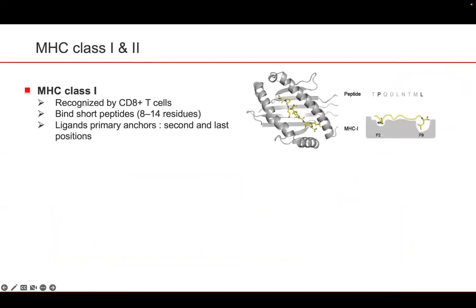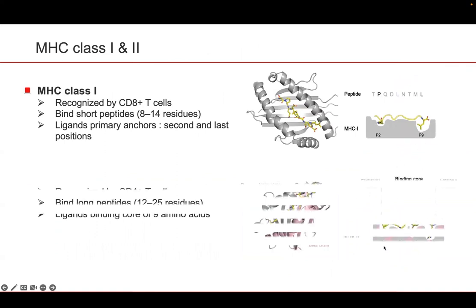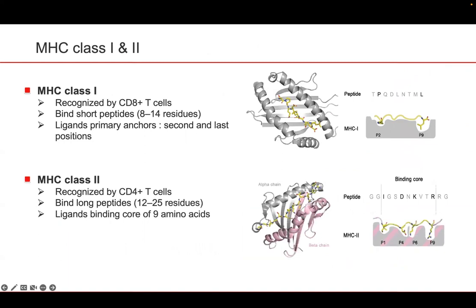There are two classes of MHC molecules. MHC class 1 are recognized by CD8 T-cells, bind short peptides roughly between 8 to 14 residues, and their ligands' primary anchors are at the second and last positions. For class 2, they are recognized by CD4 T-cells, bind longer and wider range of peptides roughly between 12 and 25 residues. However, their ligands have a fixed binding core of 9 amino acids.